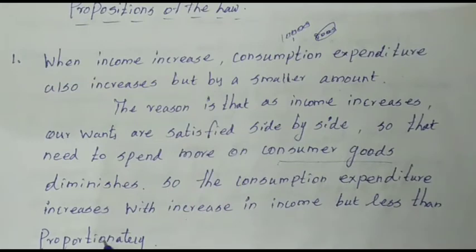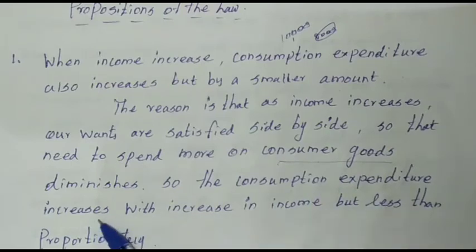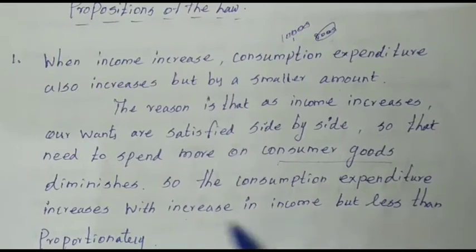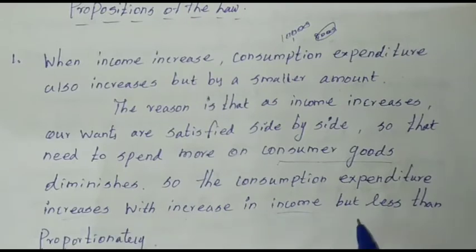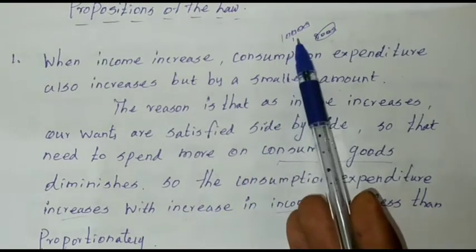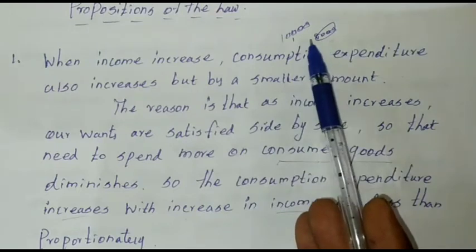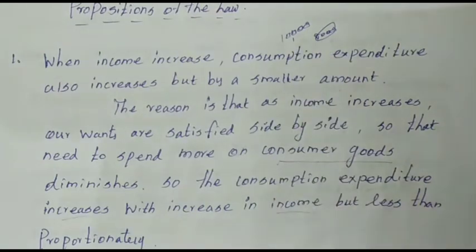So the consumption expenditure increases with the increase in income, but less than proportionately. Less than proportionately — this is the first proportion.